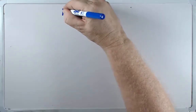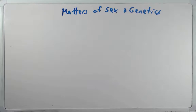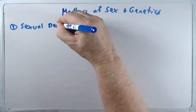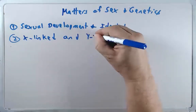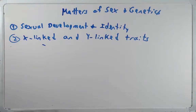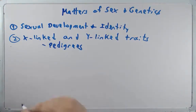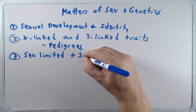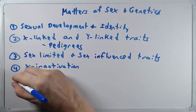Hello and welcome to this video podcast for human genetics. This will be the first of three podcasts dealing with matters of sex and genetics. Over the next three podcasts, we're going to cover some fairly broad topics. We're going to start off with sexual development and identity. We'll also talk about X-linked and Y-linked traits, compare and contrast the X and Y chromosomes, look at pedigrees showing X-linked and Y-linked traits, and cover two additional extensions to Mendel's rules: sex-limited and sex-influenced traits. We'll also spend time on X-inactivation and genomic imprinting.